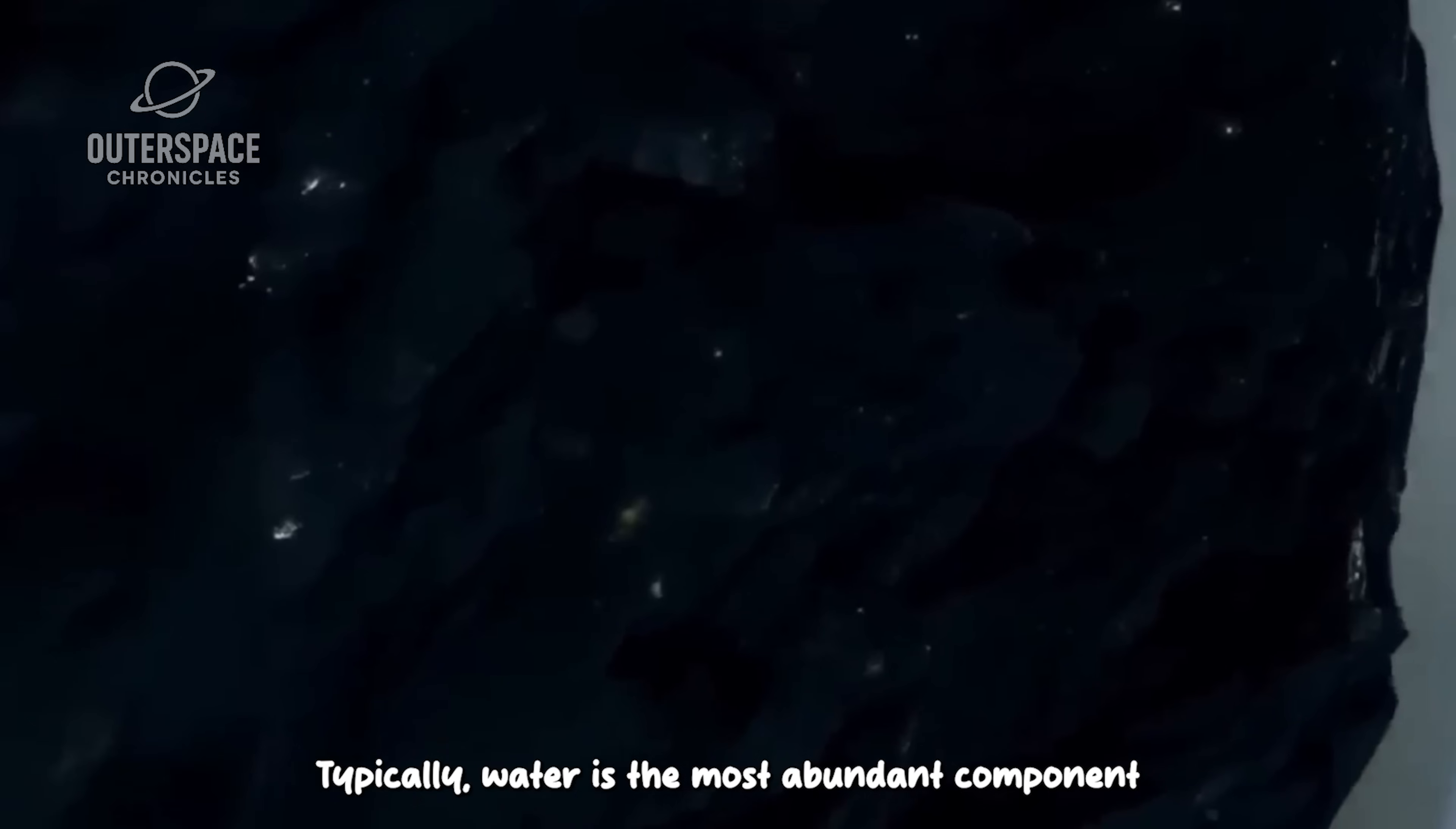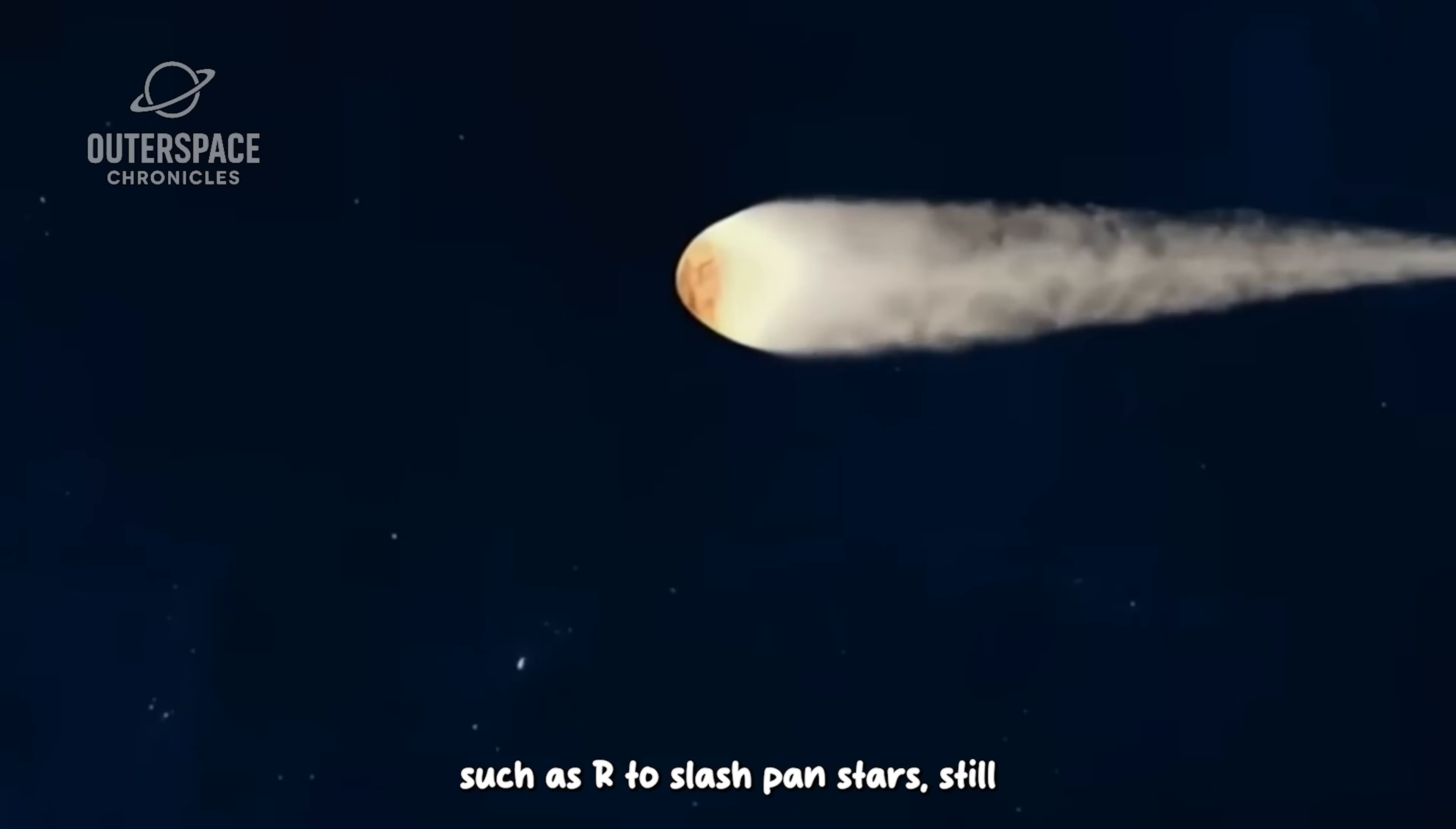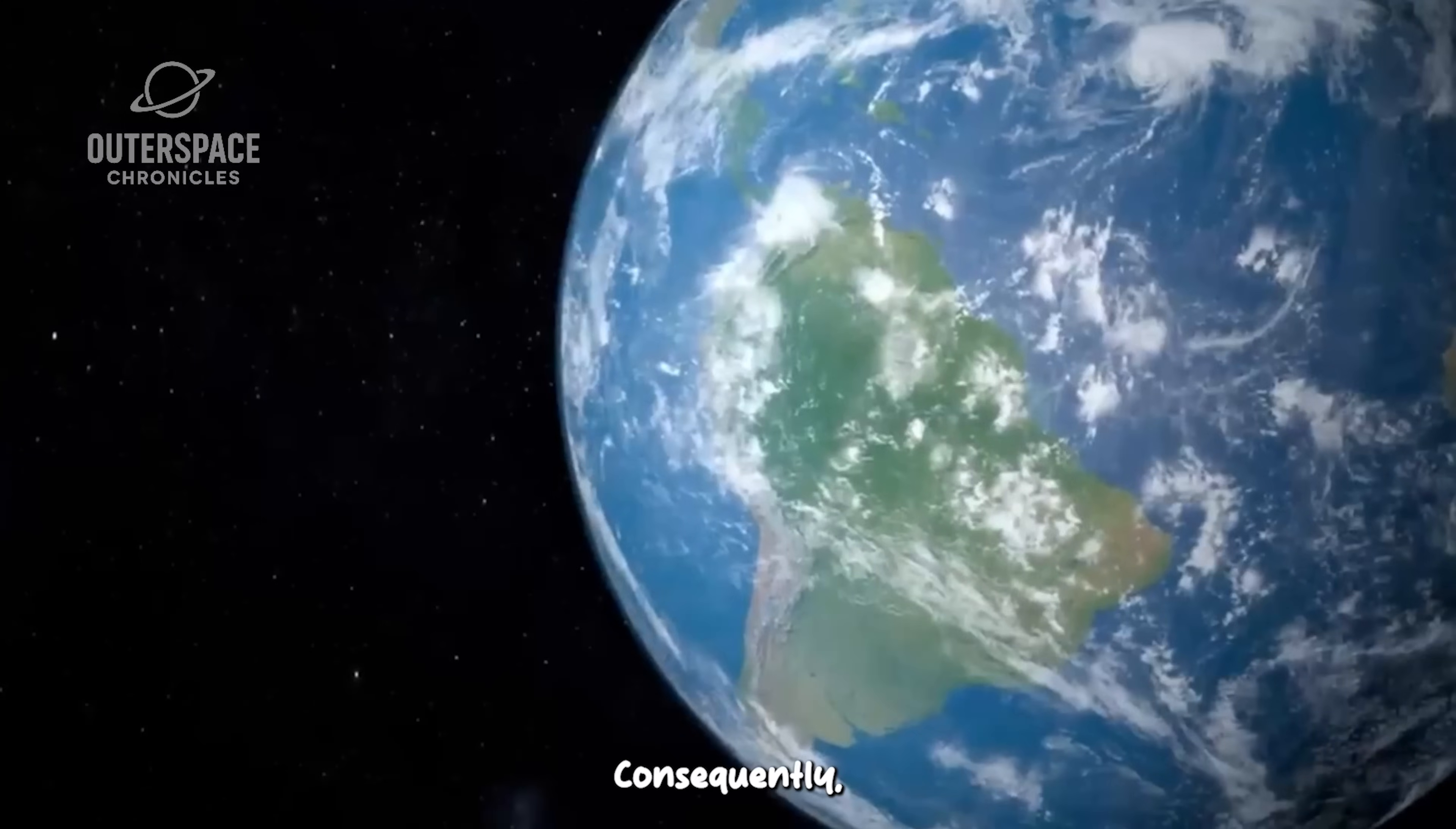It deviates significantly from what has been observed in comets within our solar system. Typically, water is the most abundant component in comets. Even those with a high concentration of carbon dioxide, such as C2 PanSTARRS, still contain about 20% water.